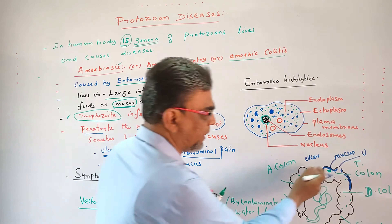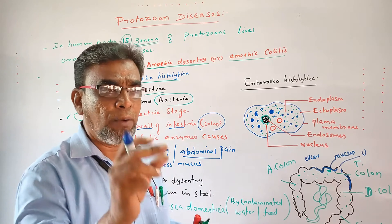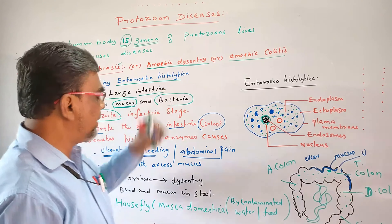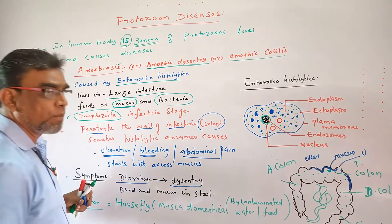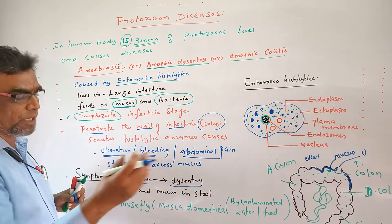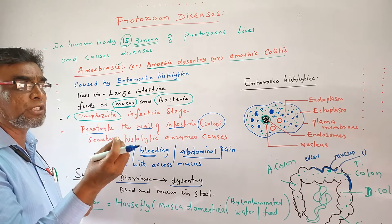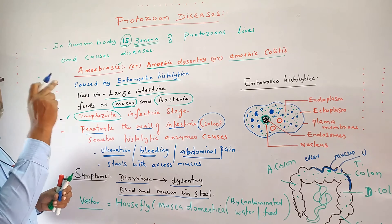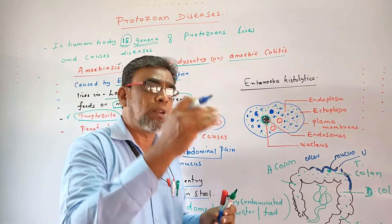The fecal matter comes out along with blood and also mucus. If you have blood in the stool, that may indicate amebiosis. These are the most important symptoms: it leads to diarrhea and dysentery. The stool contains blood drops and also mucus. Blood and mucus in the stool are the most significant symptoms of Entamoeba histolytica infection.